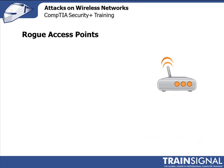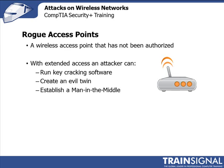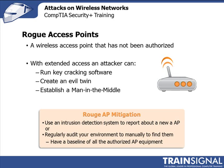A rogue access point is one that has not been authorized by the network administrators. This could have been innocently done by an employee that thinks they are just improving their work conditions, but even so, their configuration still probably does not follow your security policies and the AP could be easily found and exploited by an attacker. Or even worse, that rogue access point could have been installed by an attacker with physical access. With this access for an extended or indefinite amount of time, the bad guy could do all sorts of attacks, even ones that take a longer time to run, like key cracking programs. You will want to find any rogue access points sooner rather than later. If you have an intrusion detection system set up that is monitoring your wireless network, rogue APs can be spotted in pretty much real time.